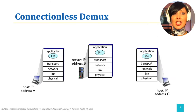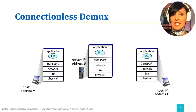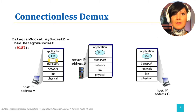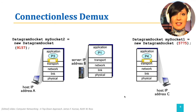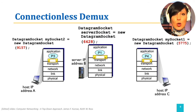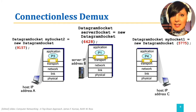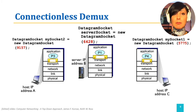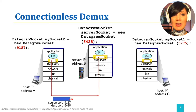Let's see connectionless demultiplexing in an example. We have three different hosts at IP addresses depicted as A, B, and C. We have created sockets 9157 on host A, 5775 on host C, and 6428 on host B. When the application running on process P3 of host A sends a segment to the application running on process P1 of host B, the segment has source port 9157 and destination port 6428.